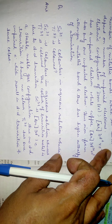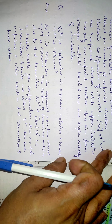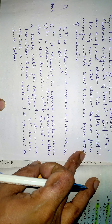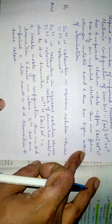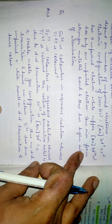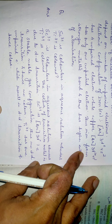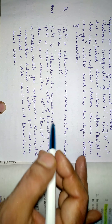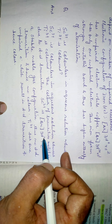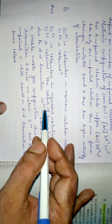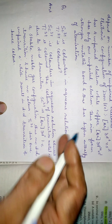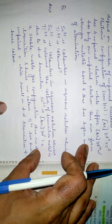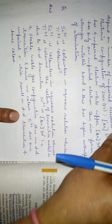Next question: Sc3+ ion is colorless in aqueous solution whereas Ti3+ is colored - why? The color of transition metal ions is due to d-d transitions. Sc3+ has the configuration 3d0 - a noble gas configuration - so it has no d-d transitions and hence no color. However, Ti3+ has one unpaired electron in the d orbitals, so it undergoes d-d transitions and hence shows colored complexes.